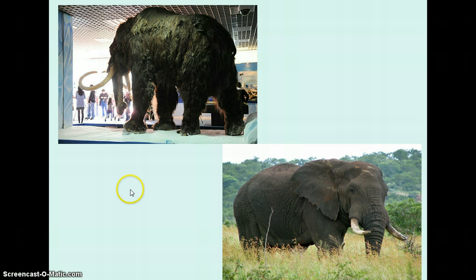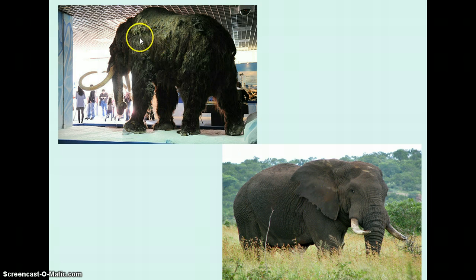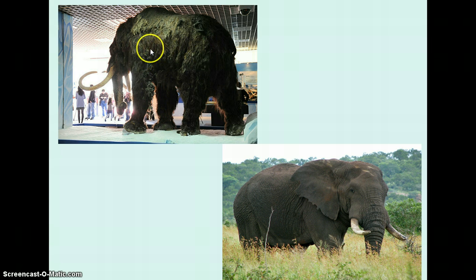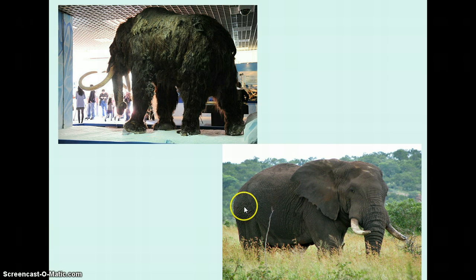Here we have a woolly mammoth unearthed from a glacier and a modern-day elephant. There's a lot of similarity in their structure — they probably had a common ancestor. Both have a trunk, long tusks, and are very large animals. But the woolly mammoth is very furry because it lived in a much colder time. These died off about 10,000 years ago, while modern elephants survive in a much warmer environment and are adapted differently.